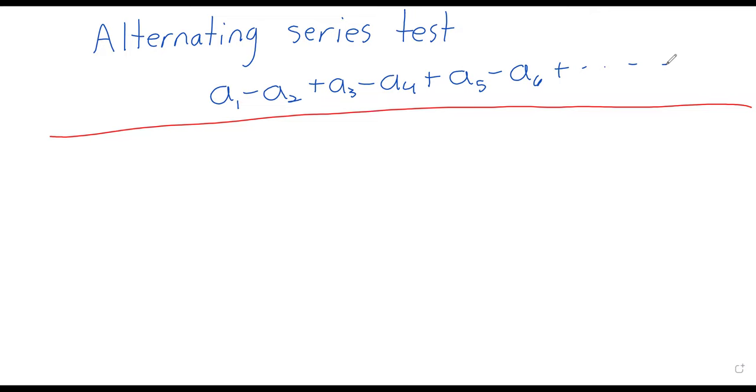The main alternating series we're going to see are something called Taylor series. And with Taylor series, you still have to use the ratio test to get information that we don't get from the alternating series test.